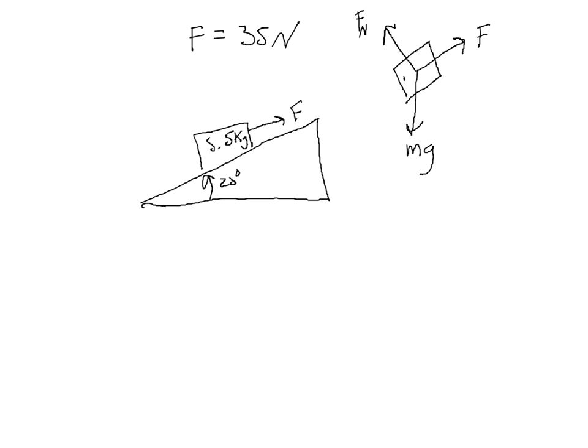When you've drawn your free body diagram, you need to select an x-y coordinate system. In this case, because it's an incline, we want to select our x-y coordinate system such that the x axis is parallel to the plane and the y axis is perpendicular to it. We need to resolve all of the forces into their x and y components. The pull force F has only an x component, the normal force has only a y component, but gravity mg has both an x and a y component, so we need to find what those are.